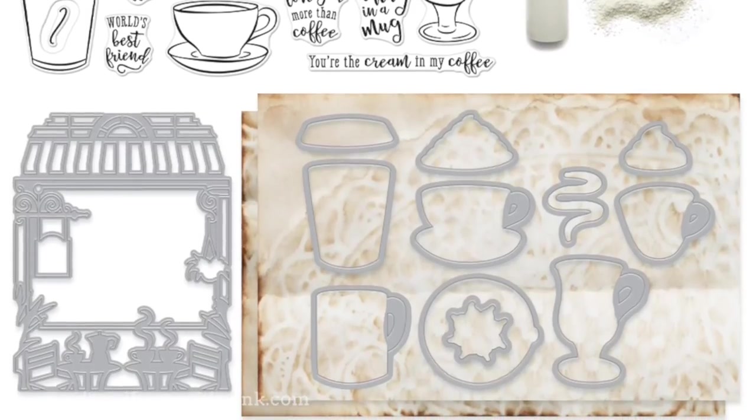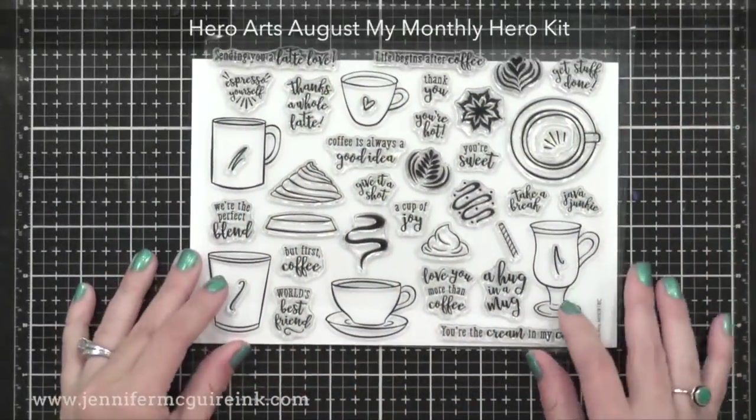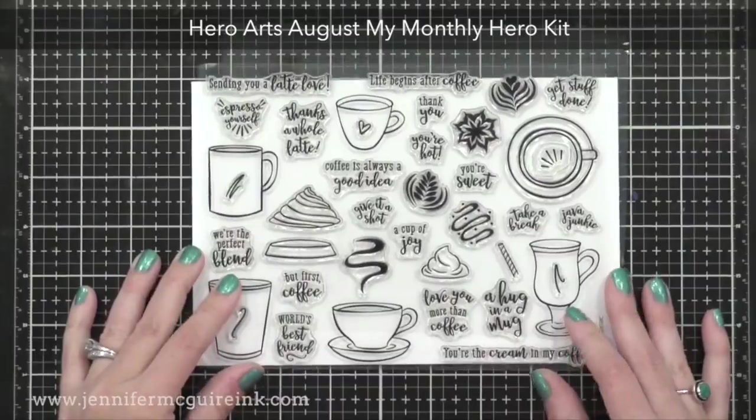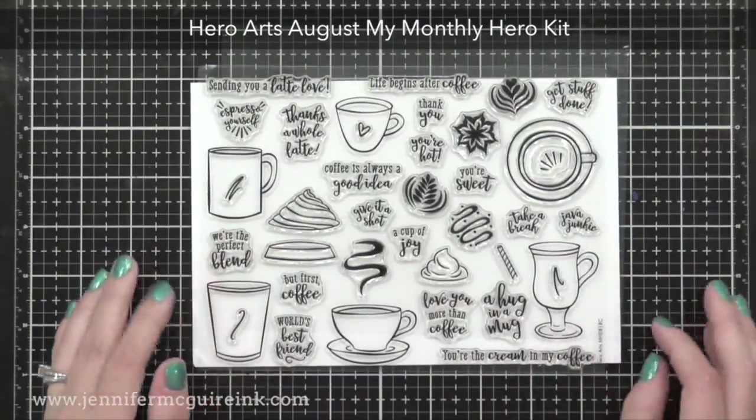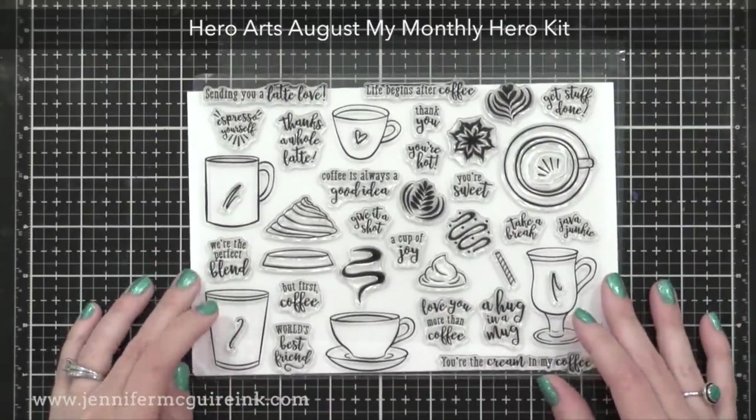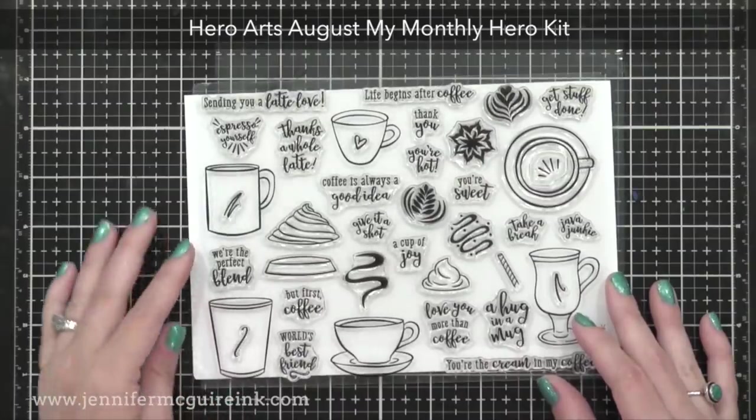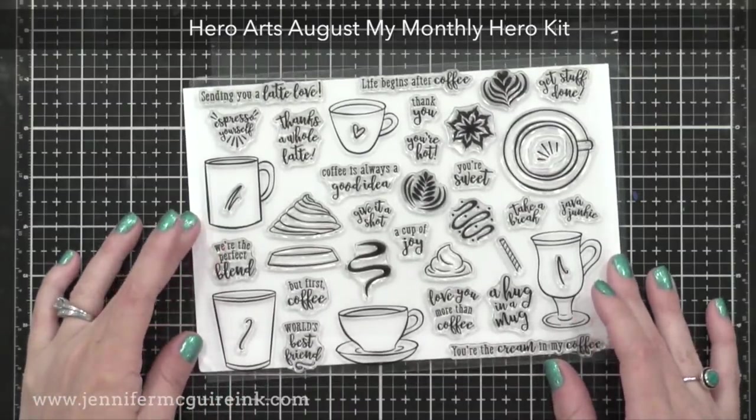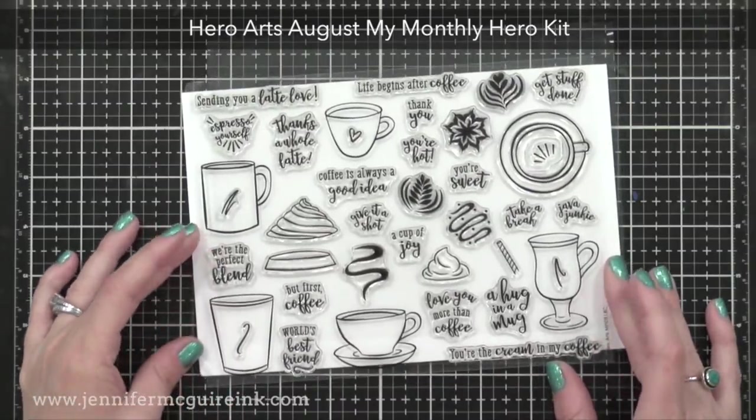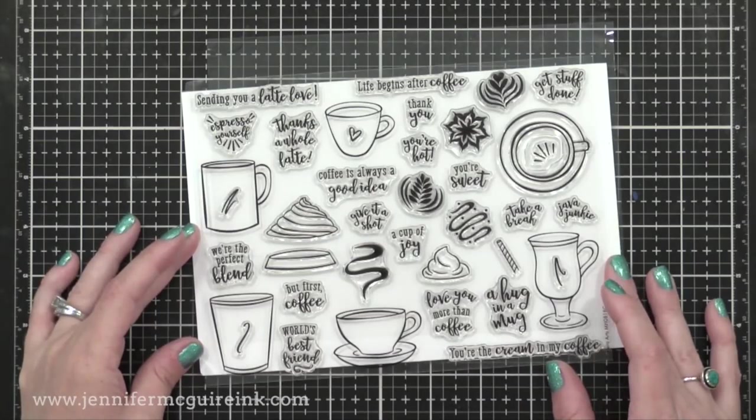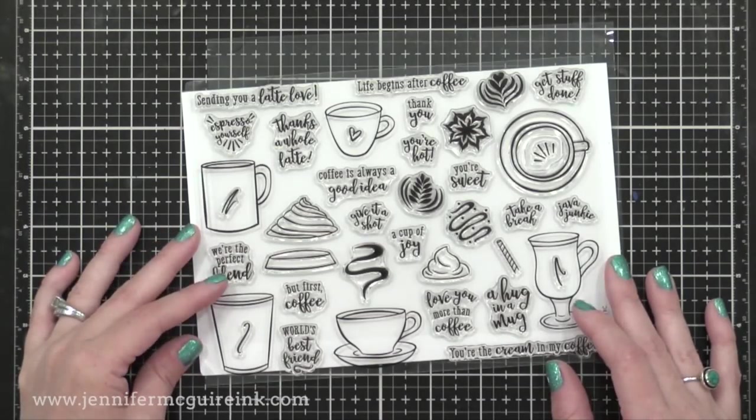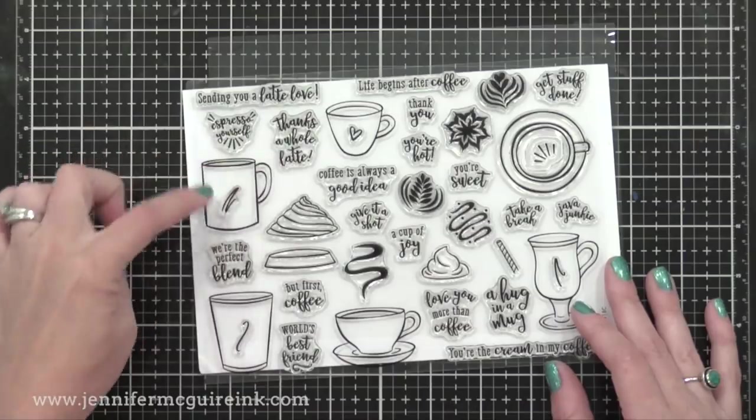Now, the fun thing about this large stamp set is the coffee mugs, the sentiments, and the little accents that you can use them with are all separate. So you can decorate these mugs however you want. You can even stamp the sentiments on them. They're perfectly sized. Another fun thing about this set is that they could be used for coffee, tea, or hot chocolate.